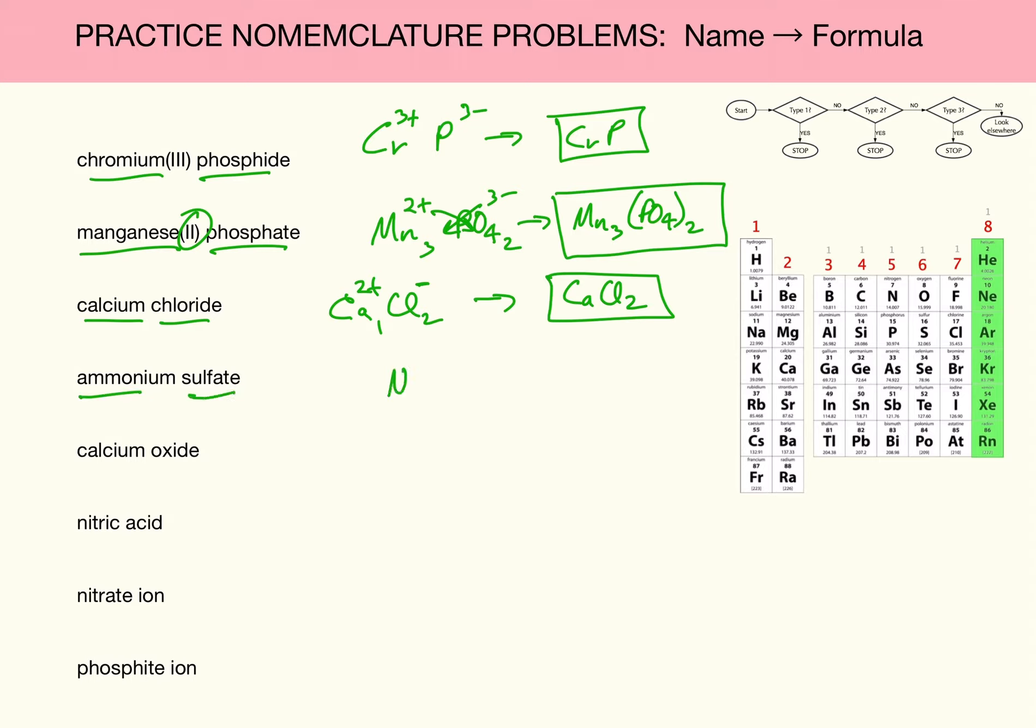Ammonium sulfate. Ammonium is memory. That ion was NH4+. Sulfate, that was also memory, SO4 2-. That comes from sulfuric acid. Is it charge neutral? No, I'm going to need two ammoniums to make this charge neutral. NH4 subscript 2, SO4.